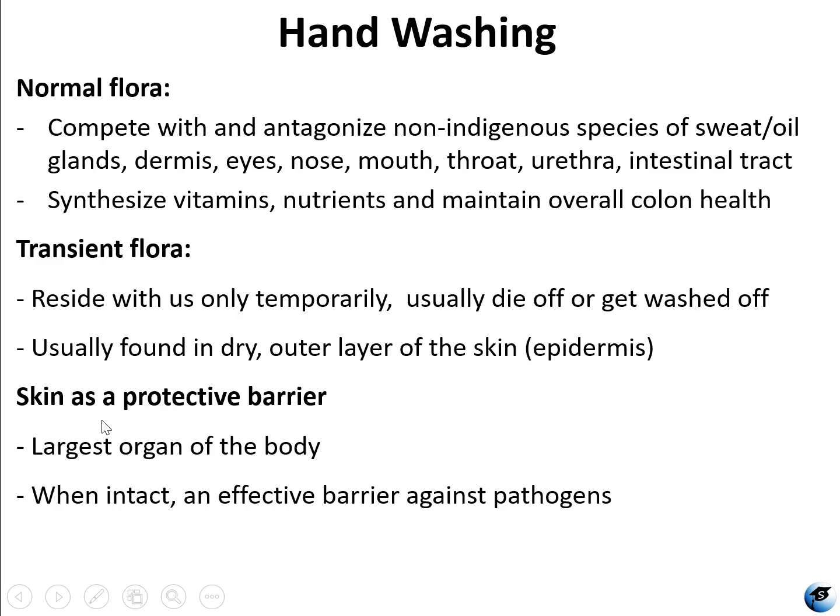However, normal flora can become pathogenic if they go somewhere they're not supposed to be. For example, Staphylococcus aureus is normal flora of the upper respiratory tract, but if it gets into a skin laceration and enters your bloodstream, then all of a sudden you have a staph infection. Normal flora compete with and antagonize non-indigenous species, which is good because they can crowd out pathogens that are trying to make you sick.